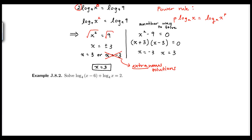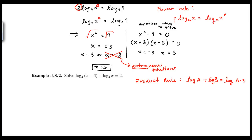Let's go on to the next example. I want to solve log base 4 of x minus 6, plus log base 4 of x, equal to 2. On the left side I have a sum of two logs, so I have to remember the product rule of logs: log of a plus log of b equals log of the product a times b.